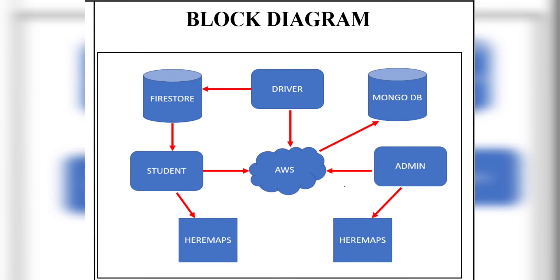Now I am going to explain the block diagram. When the driver clicks the Start Journey icon and gives permission to access the location, the GPS location of the driver is sent to the AWS Server in the form of coordinates. These coordinates are stored in the Firestore Database. When the driver is in motion, the real-time coordinates are continuously sent to the AWS Server and the server frequently updates the location of the bus and sends the data to the Firestore Database.